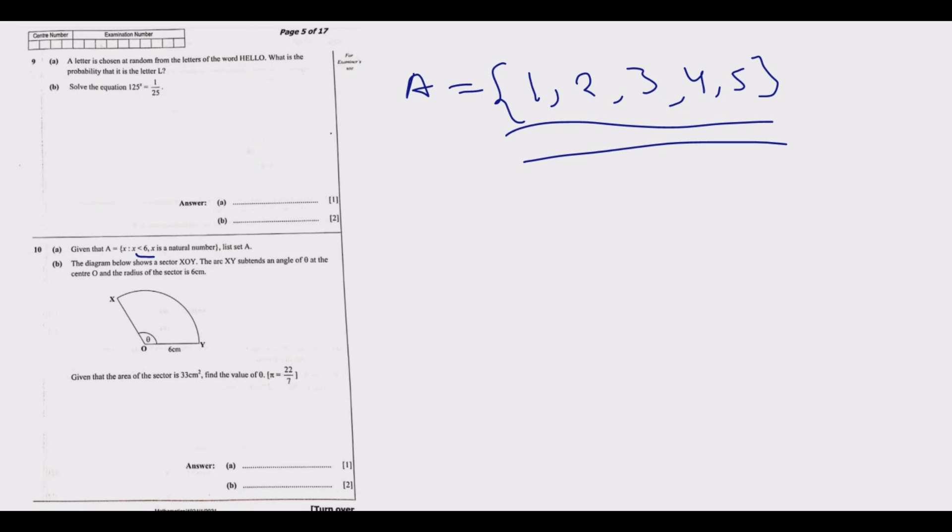Question 10b: The diagram below shows a sector XY. The arc XY subtends an angle of theta at the center O, and the radius of the sector is 6 centimeters. Given that the area of the sector is 33 centimeters square, find the value of theta. Understanding what we're being asked is important - in this case we are being asked to find theta.